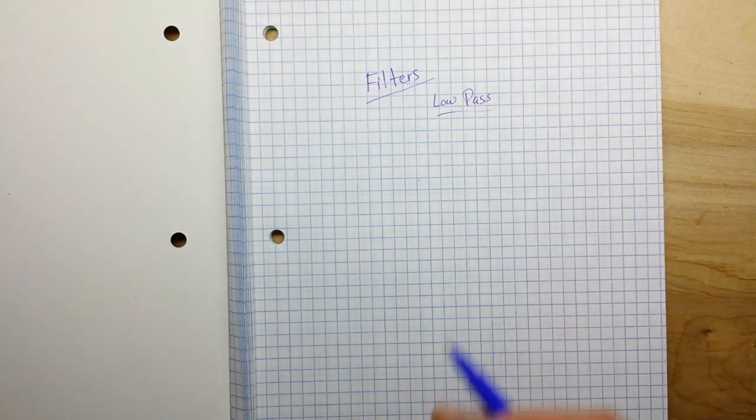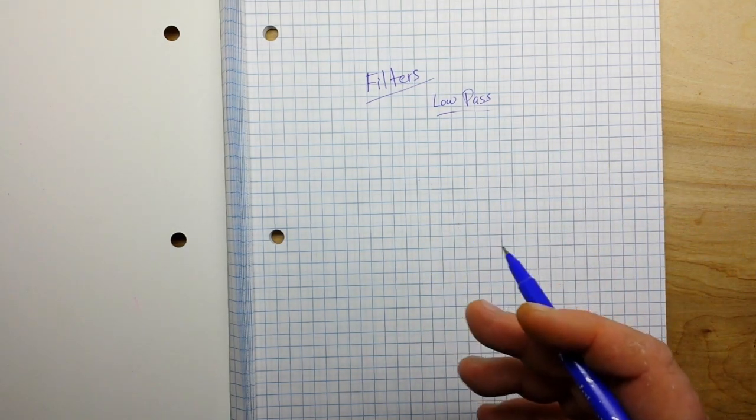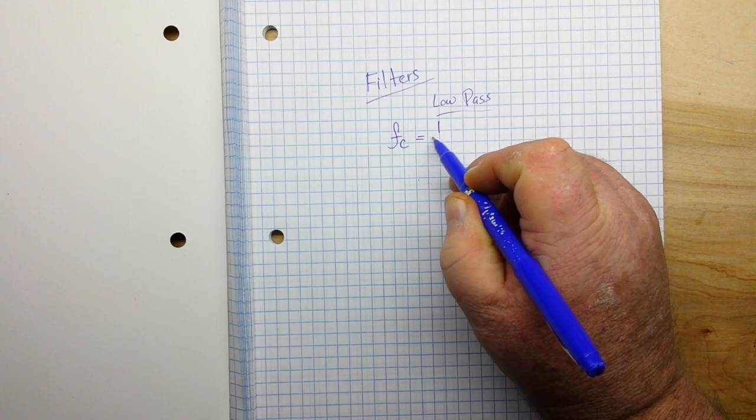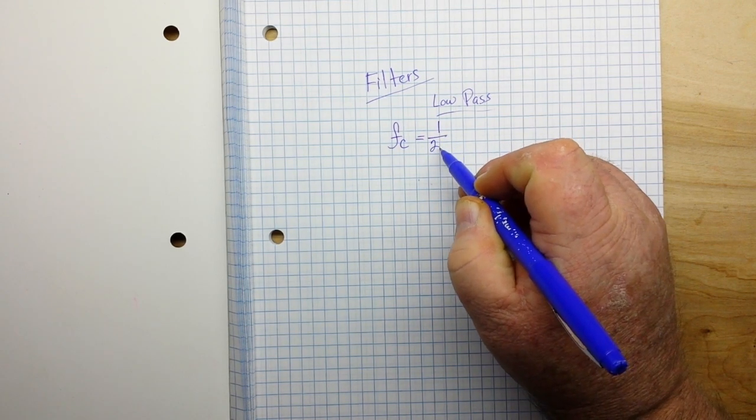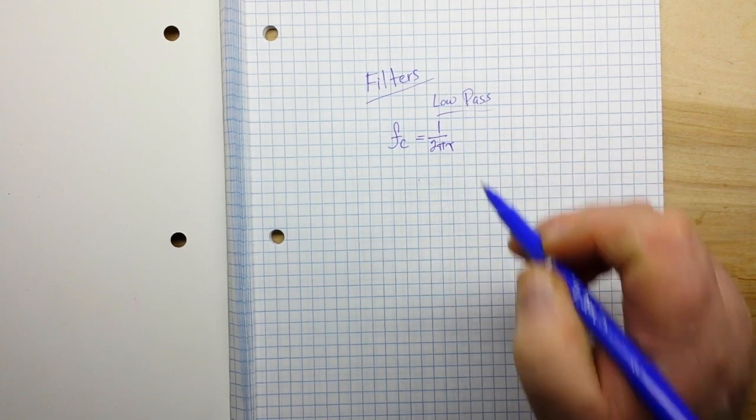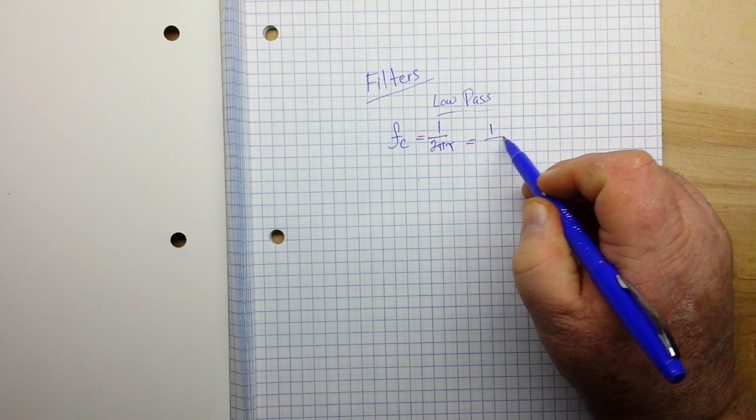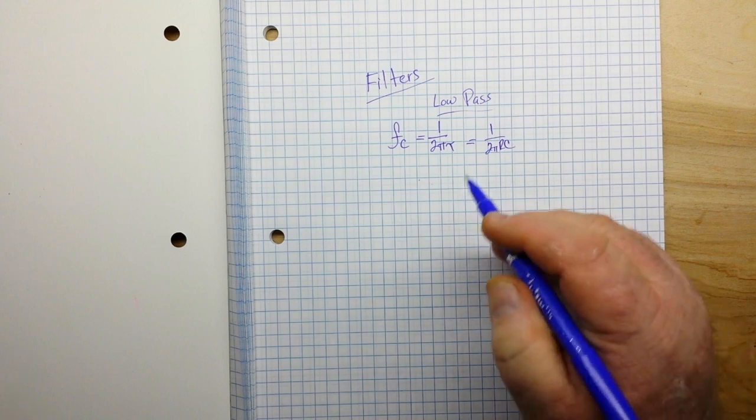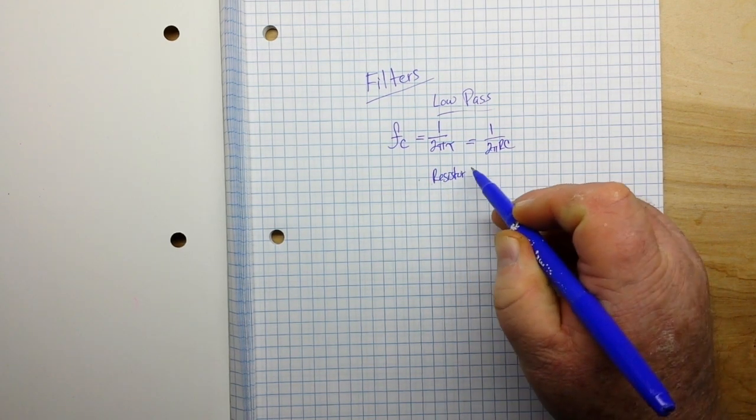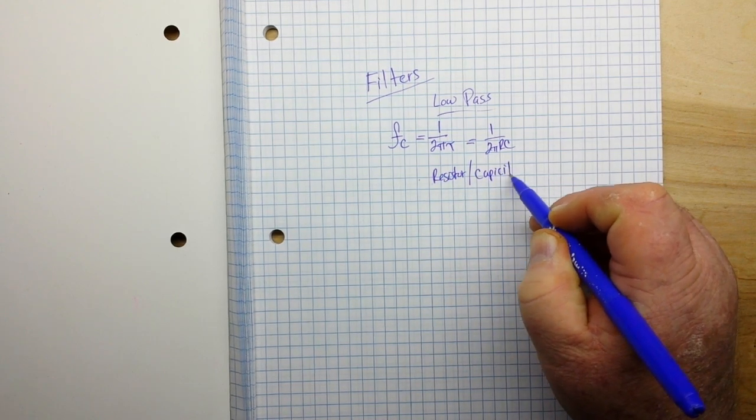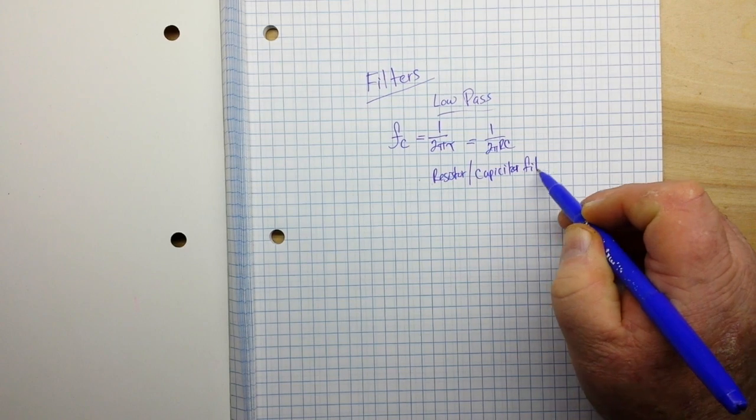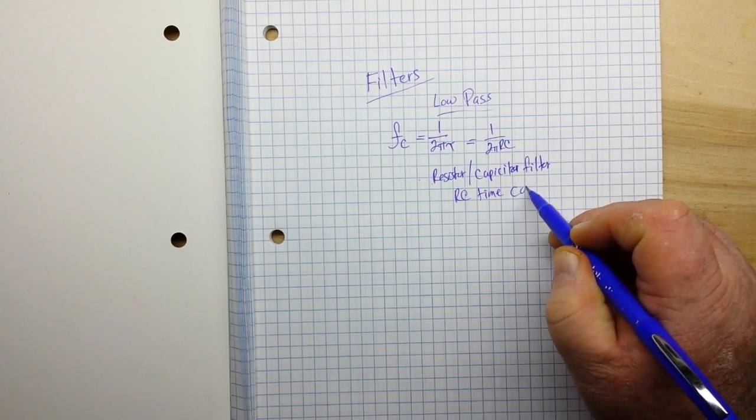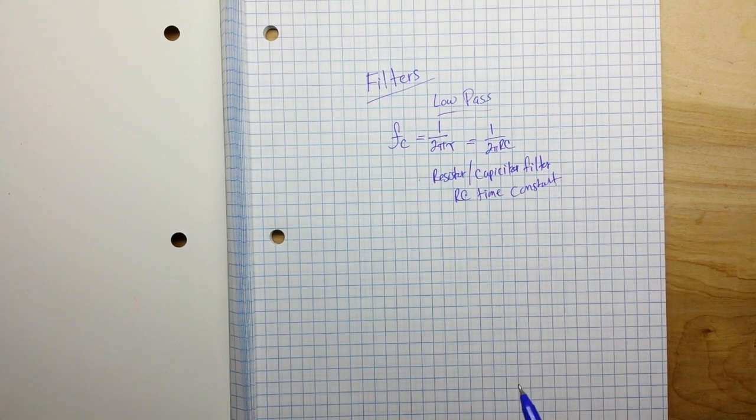It's a filter that passes signals with a frequency lower than the set point of the filter. And how do we find that? Well, our formula for the cutoff frequency is 1 over 2 pi tau, or 1 over 2 pi RC. So what's that tell you? That tells you that this is a resistor capacitor filter, and we will be using the RC time constant to determine our filter.